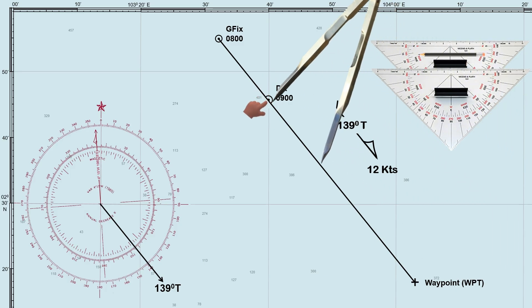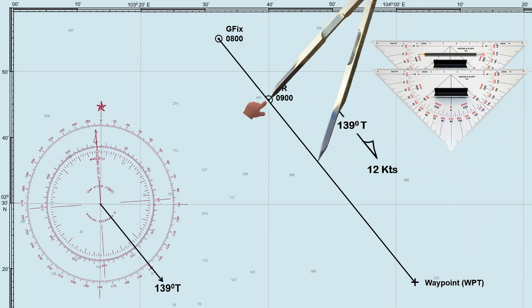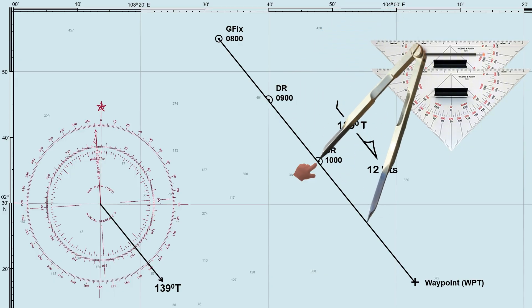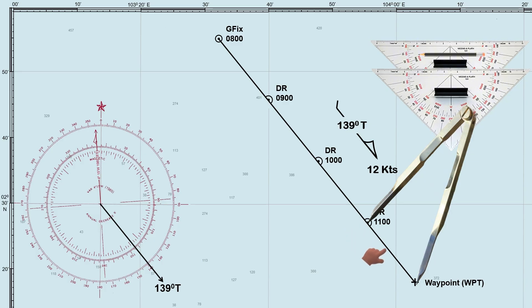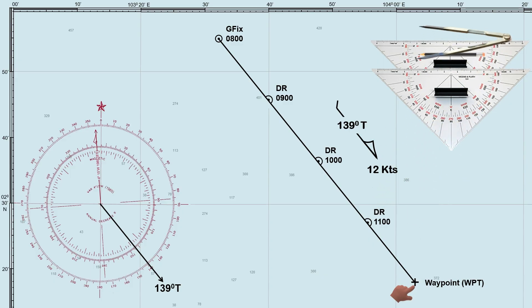If we measure another 12 nautical miles from 0900 hours, this gives us the ship's DR position at 1000 hours. Similarly, by measuring another 12 nautical miles, the DR position at 1100 hours will be here, and so on. Keep in mind that DR positions can be increasingly inaccurate over time because we don't account for external factors such as wind and current. Therefore, DR is less precise compared to GPS and radar fixes.